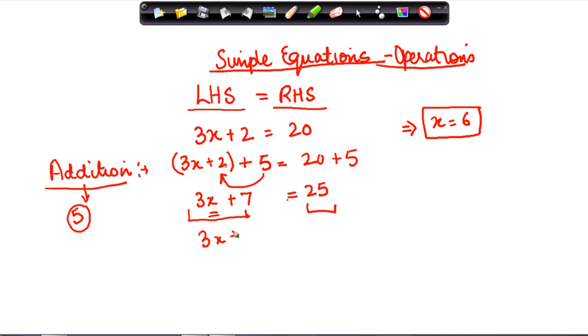So 3x plus 7 minus 7. If we perform the same operation on both the sides, the value should remain the same.